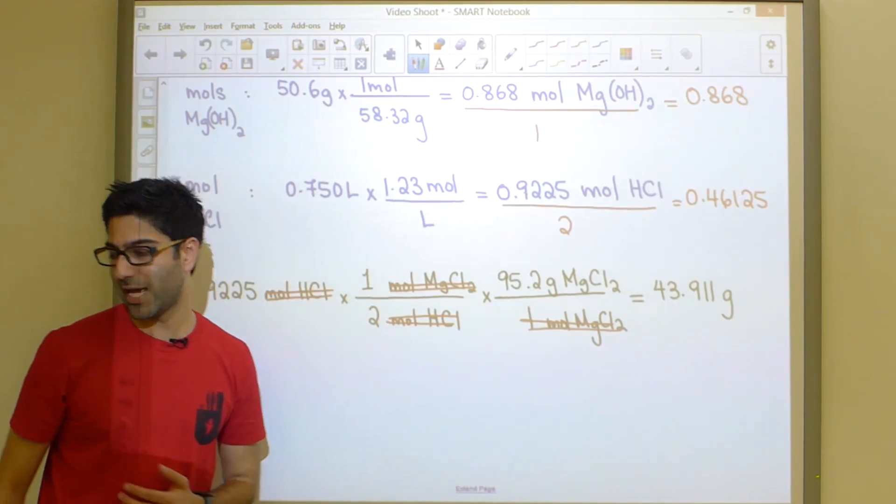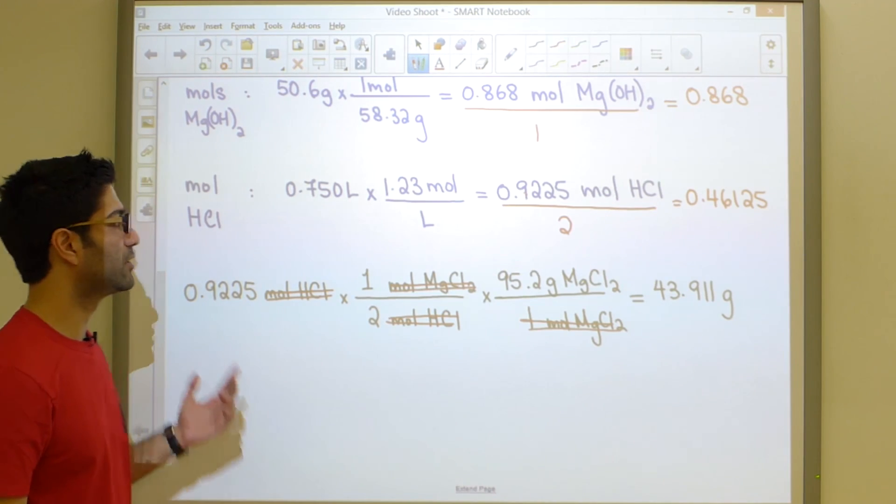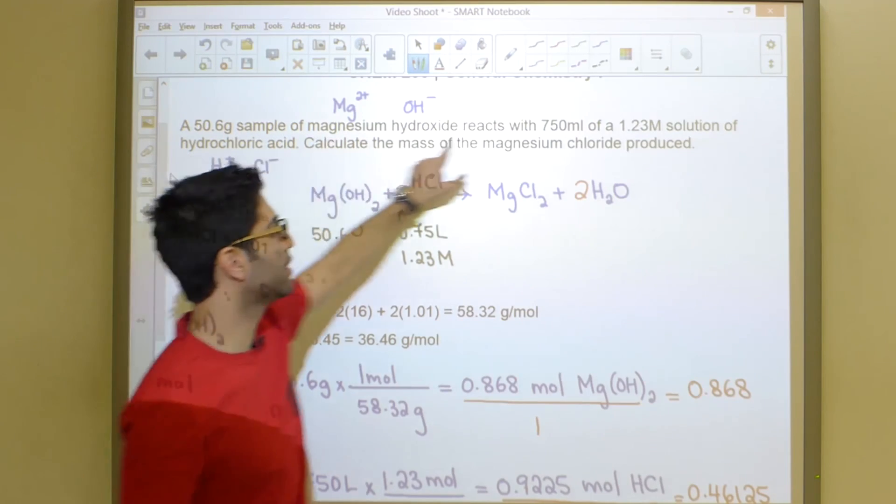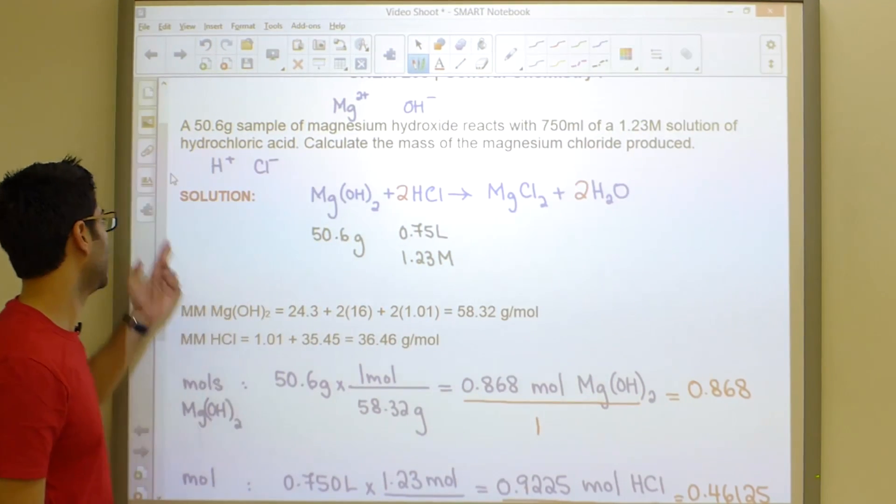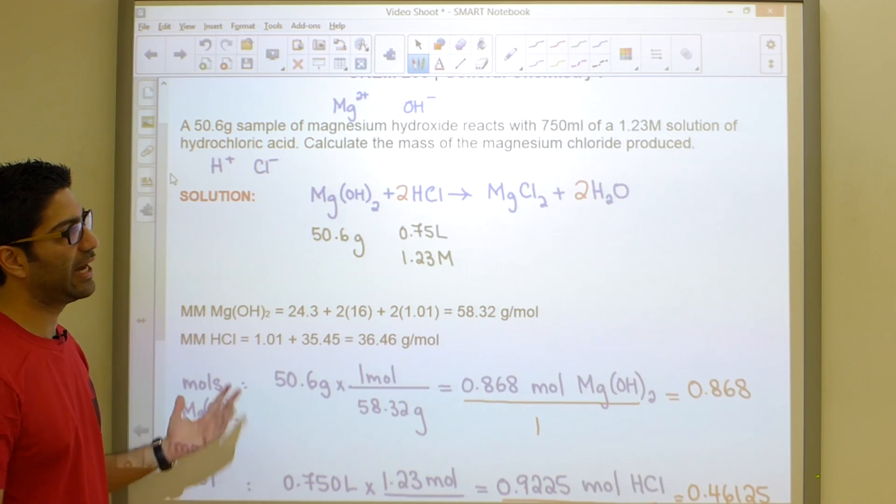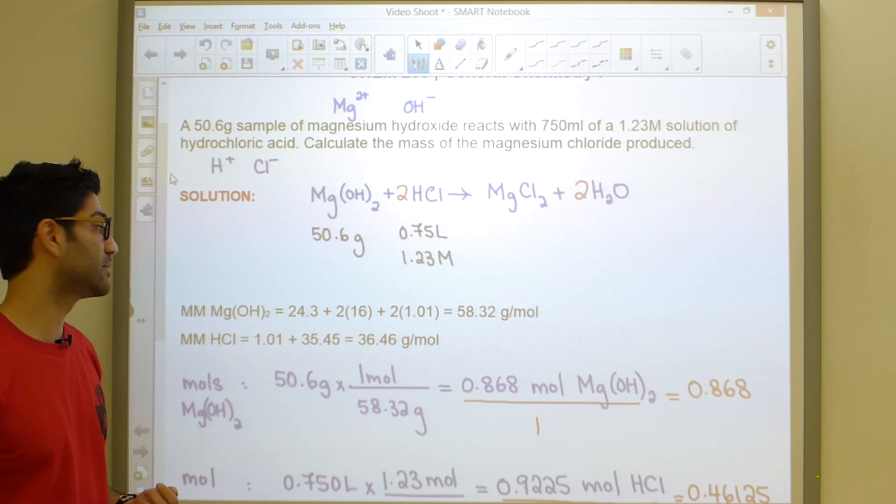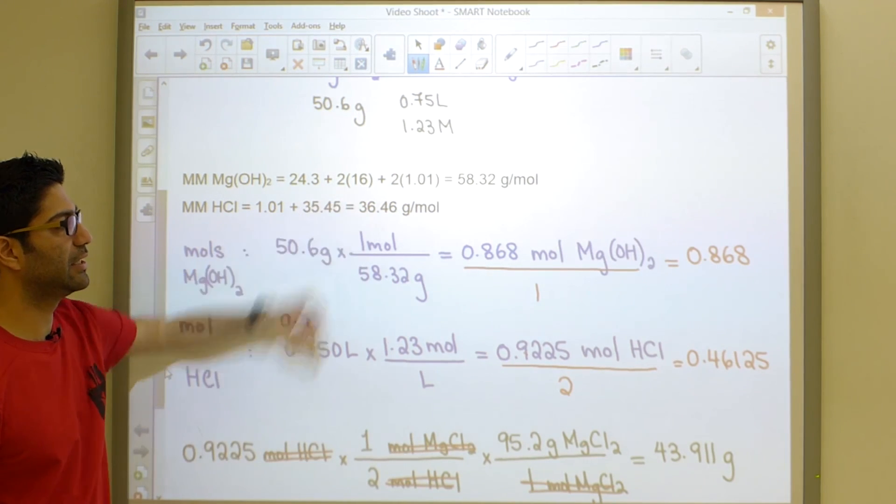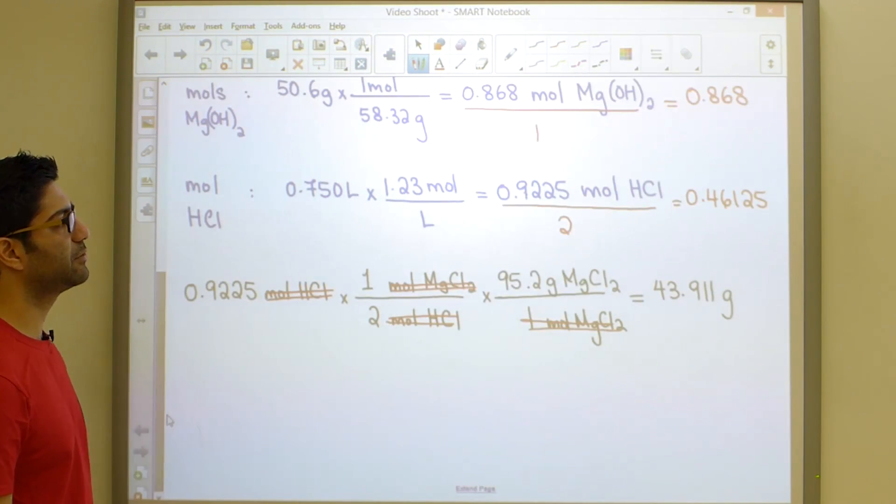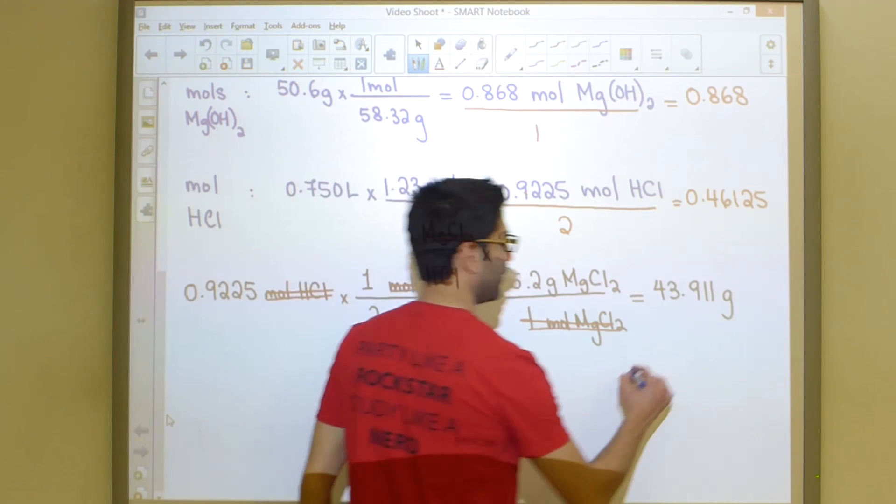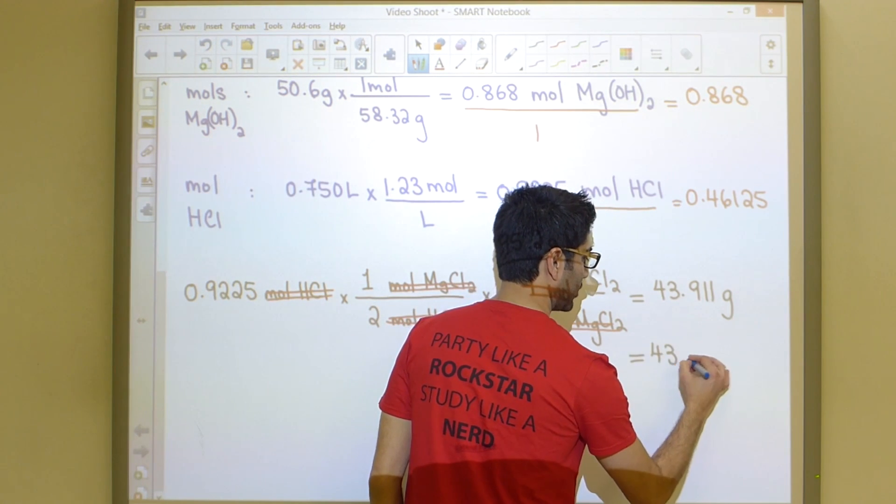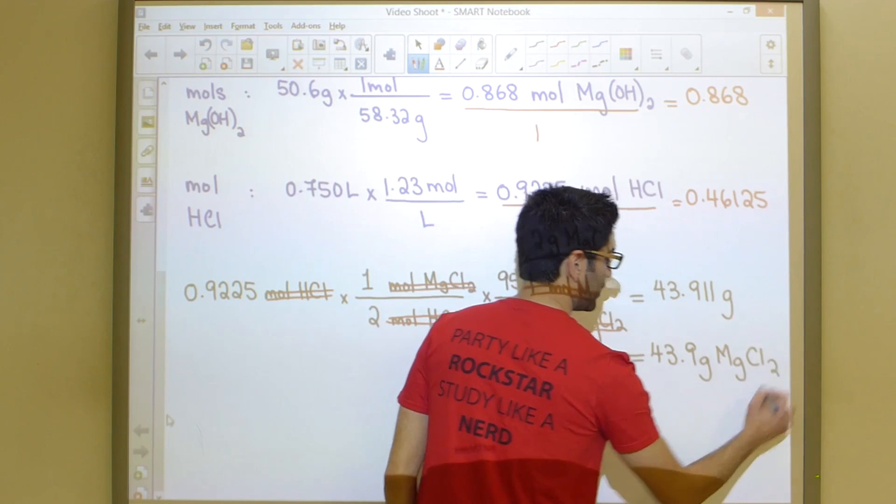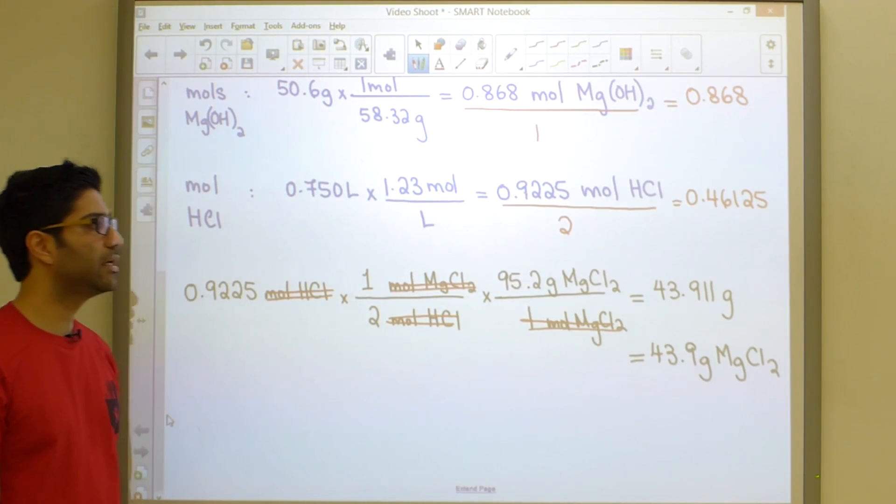We should now go ahead and make sure that our significant figures are all intact. In the problem itself, we're given three sig figs here, three sig figs here, and three sig figs here. Unless we've added or subtracted somewhere, our answer should also contain three sig figs. When I say adding and subtracting, molar masses don't count. You always write more sig figs than necessary. It seems to me that in this problem, we have to make sure that we write our answer using three significant figures. Our final answer over here is 43.9 grams of MgCl2 are produced.